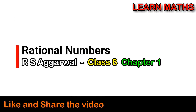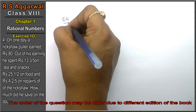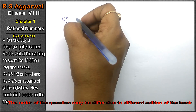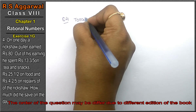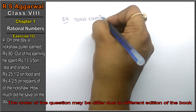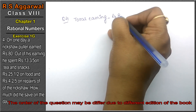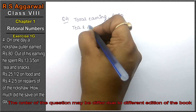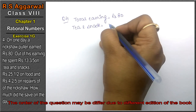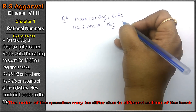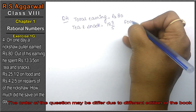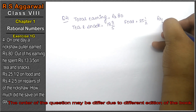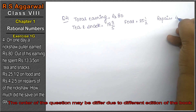Let's do question number 4 of exercise 1G on rational numbers. On one day, a rickshaw puller earns Rs. 80. His total earning is Rs. 80. Out of his earnings, he spent on tea and snacks Rs. 13 and 3/5, on food Rs. 25 and 1/2, and on repair Rs. 4 and 2/5.